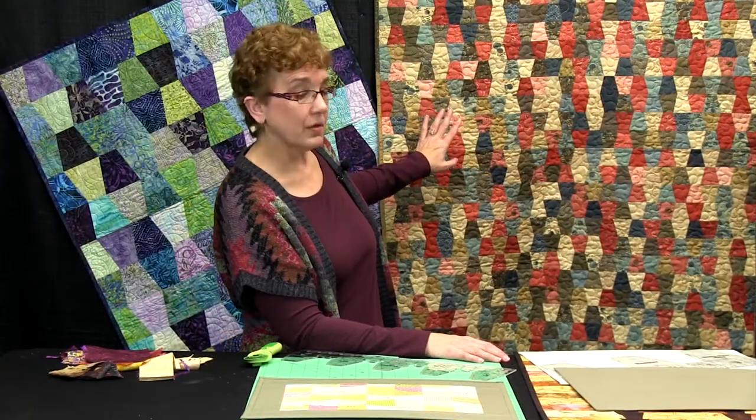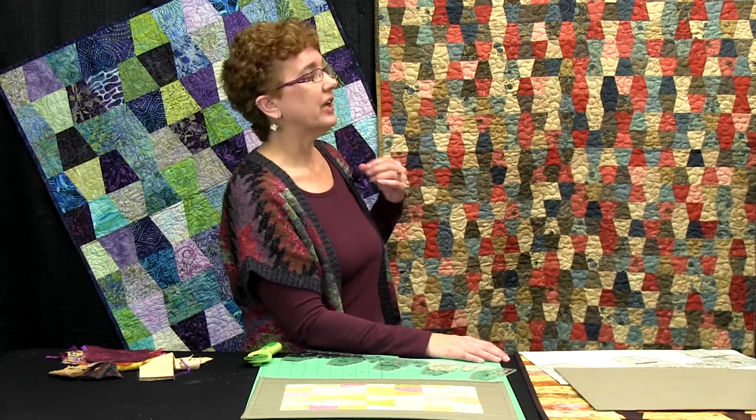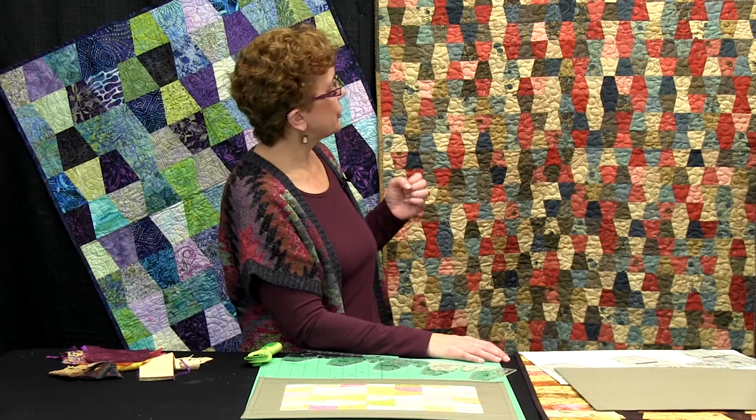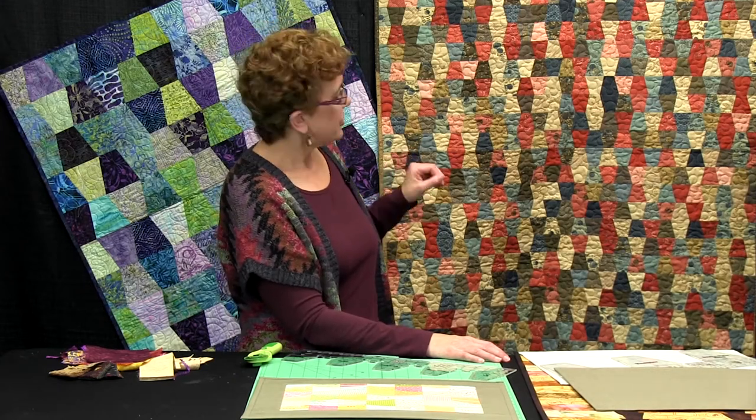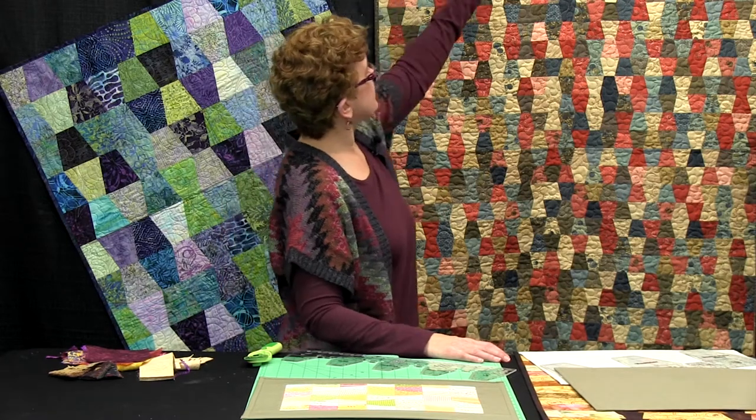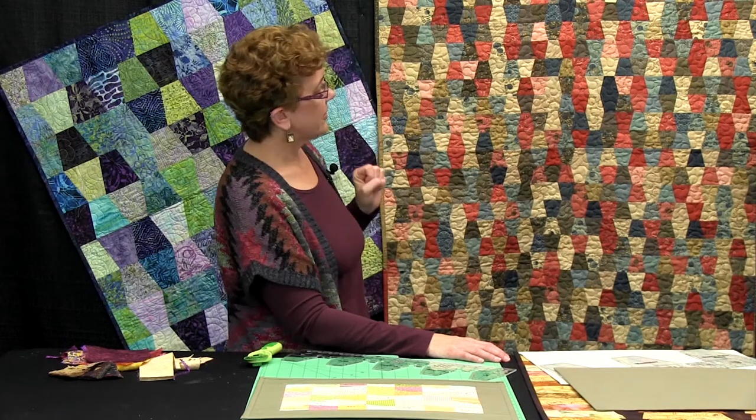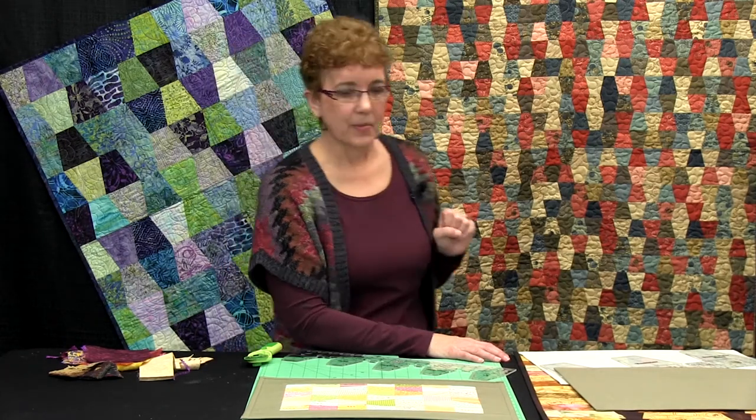Behind me here, this is all made from a jelly roll, or a bali pop, or any collection of forty to forty-two, 2½ inch strips. You saw how quickly we can cut those up. Then it's just sewing straight seams, putting these all together in a row, and then sewing the rows together, and you've got a nice size lap quilt ready to go.